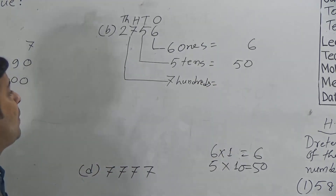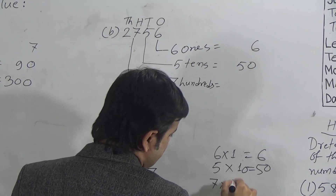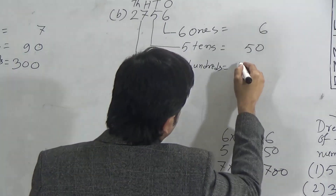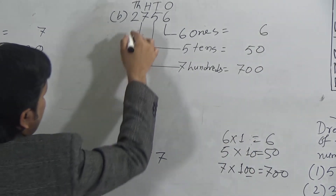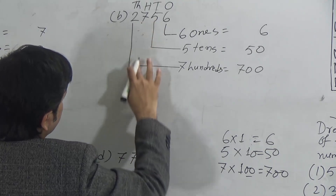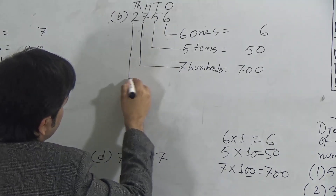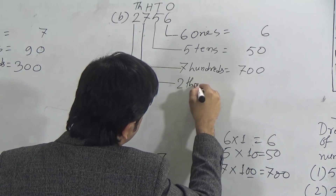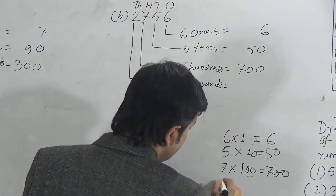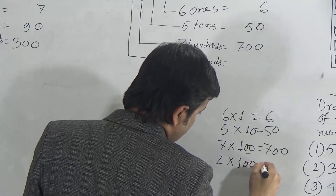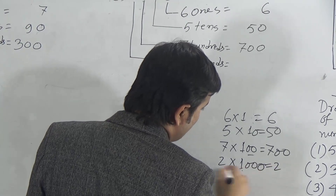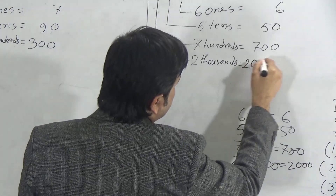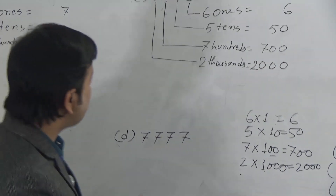Seven is in hundreds position — seven hundreds means multiply seven by one hundred, which equals seven hundred. Now the place value of two — two is in thousands position, so we write two thousand. We multiply two by one thousand, which equals two thousand. Dear students, I hope you have understood the place value of the digits of the second number.